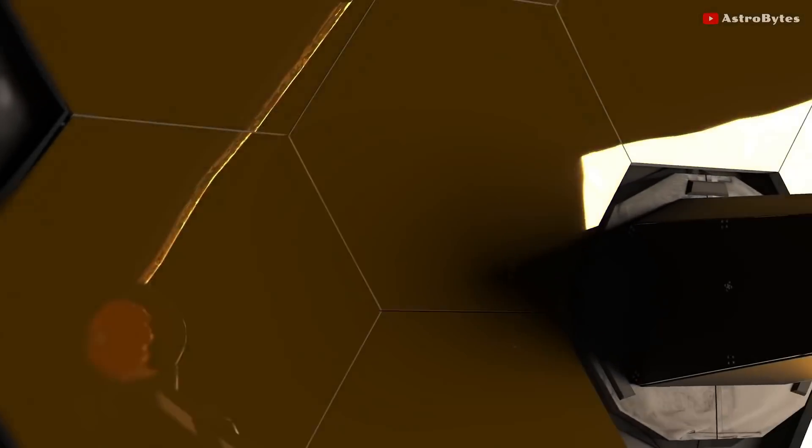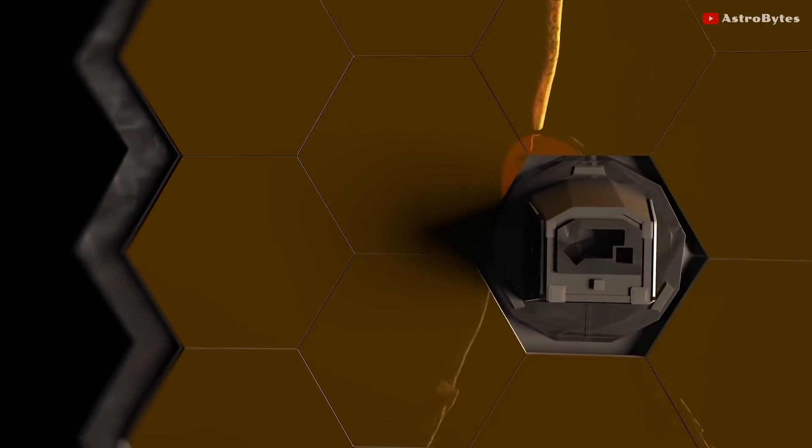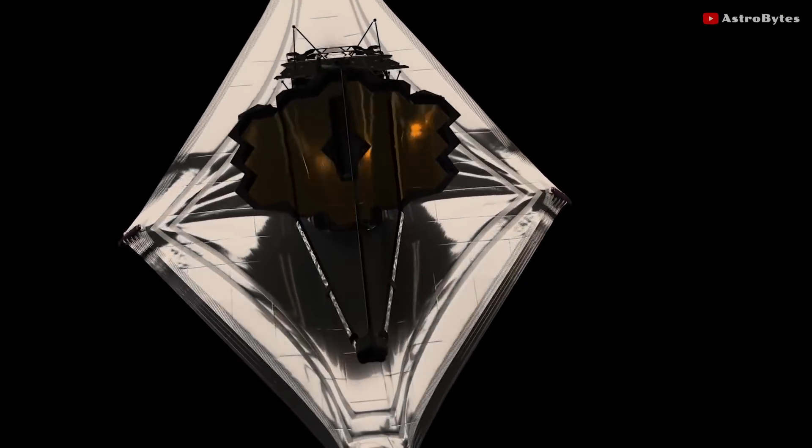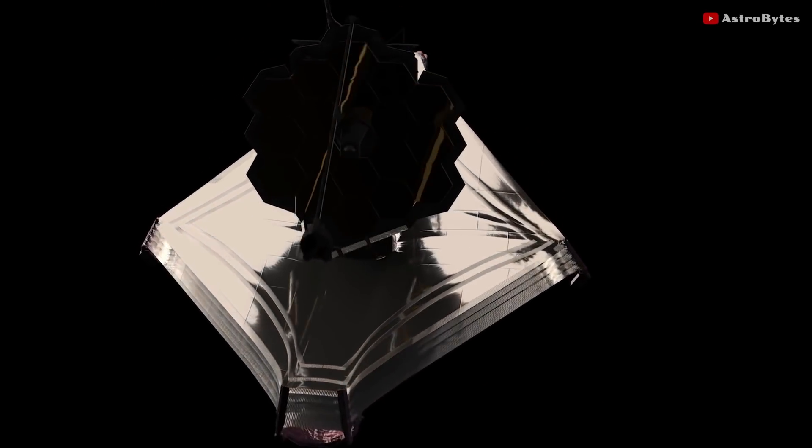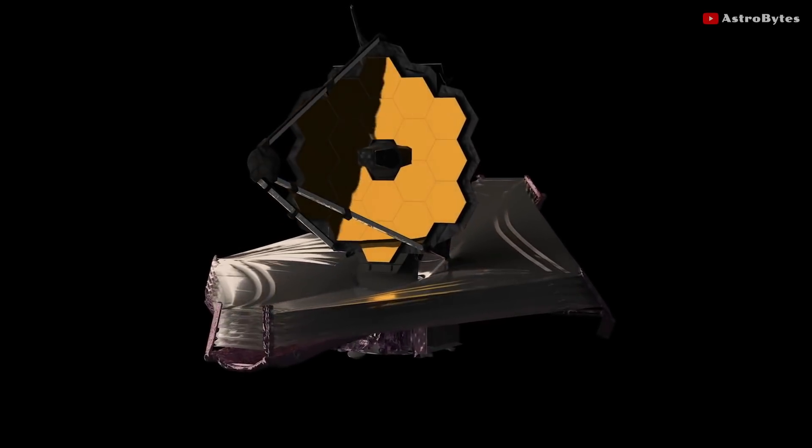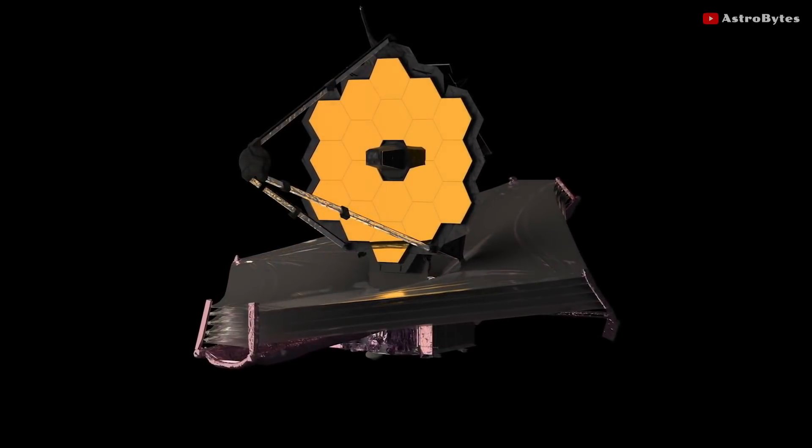The iconic James Webb telescope has finally turned on its camera. The 10 billion dollar telescope would still take months to begin its journey as it has to cool down and undergo weeks of calibration work to ensure that the 18 segments of the main mirror work as one.